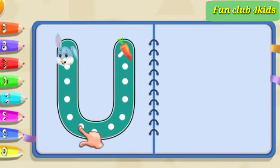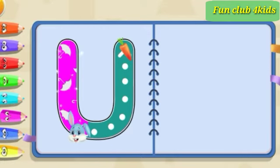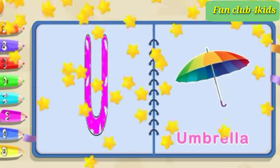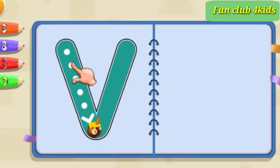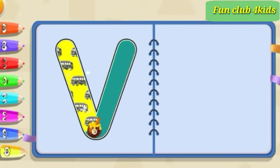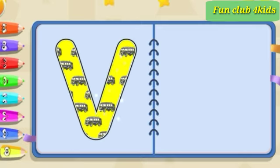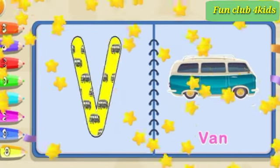Pull down, around and up. U is for umbrella. Slide down, slide up. V is for van.